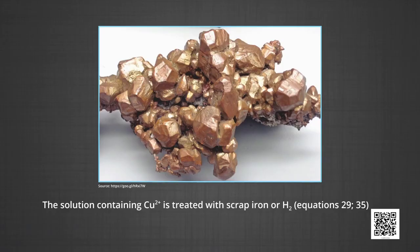Now let us understand another method — hydrometallurgy. Copper from low-grade ores and scrap copper is extracted by hydrometallurgy. It is leached out using acid or bacteria. The solution containing copper ions is treated with scrap iron or hydrogen. As seen in the equation: Cu²⁺ + H₂ → Cu + 2H⁺.